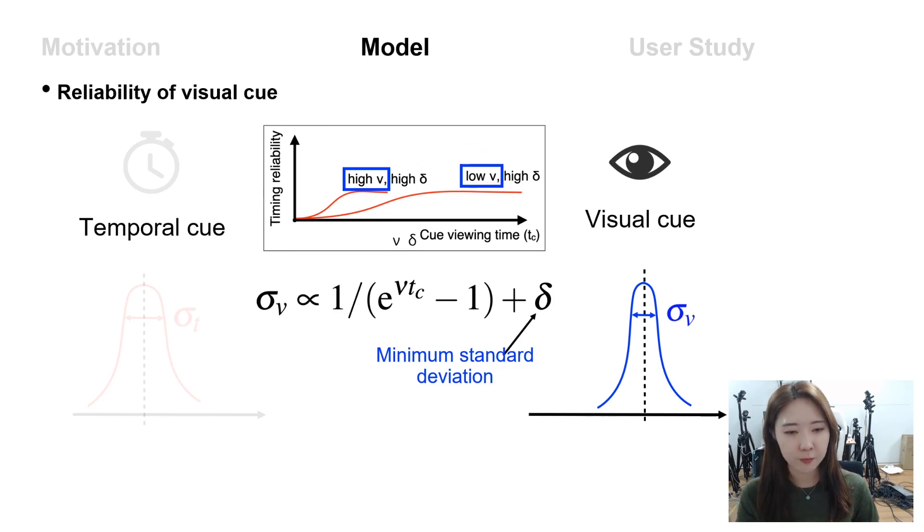And nu represents the drift rate, which means the efficiency of encoding information. As the drift rate becomes higher, the user can encode more information during the same cue viewing time, and the timing reliability will converge to the maximum value faster.